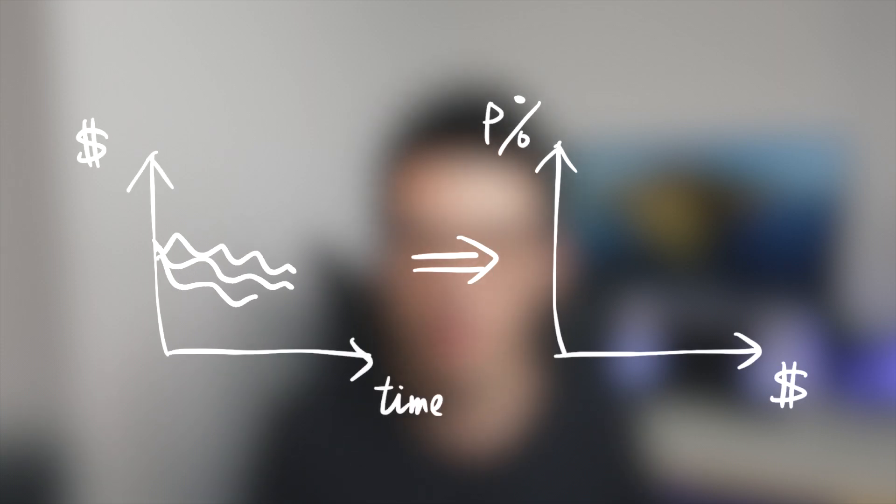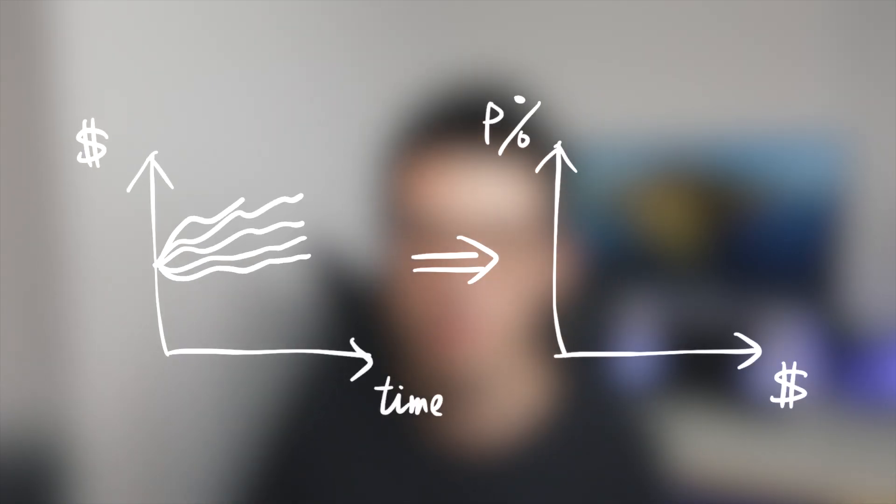Say if all the predicted prices are going down, we can get a distribution graph like this, then we know we don't have to buy Bitcoin now. But if all the predicted prices are going up, then we can buy the Bitcoin now. So why can Monte Carlo method predict the probability? We have to take a deeper look and break it down.